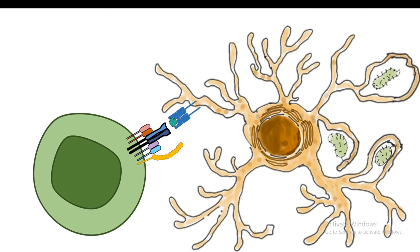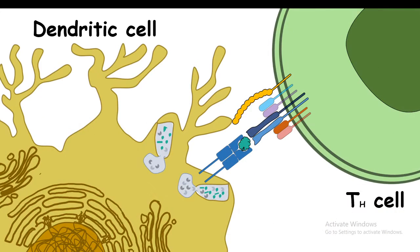The T helper cell's sole job is to recognize antigens which are displayed on class II MHC molecules by antigen presenting cells such as this dendritic cell. The dendritic cell would present extracellular antigens which are derived from pathogens, and the T helper cell would recognize that pathogen-derived antigen with its T cell receptor.